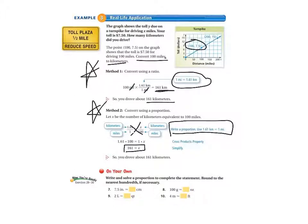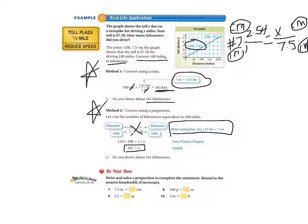So let's do the on your own problems. I'm going to work these on the side because there isn't much room at the bottom of my screen. You be sure to do these in your notebook. It says write and solve a proportion to complete the statement. Round to the nearest hundredth if necessary. So it says 7.5 inches equals a certain number of centimeters. I have set up our proportion. I used the back of the book to find our conversion factor.